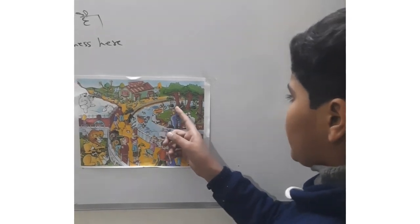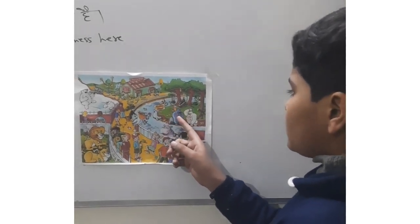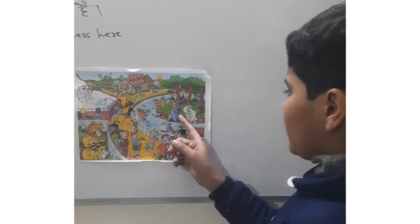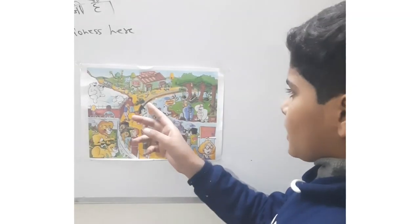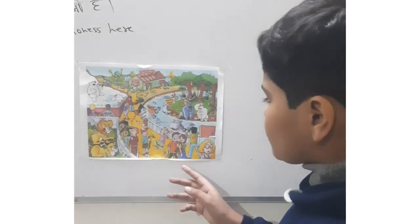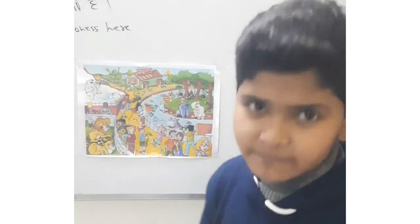Here there are many monkeys. Here there are two gorillas with black and white colors. They are fighting with each other. This is a beautiful picture of a zoo. Thank you for listening to me.